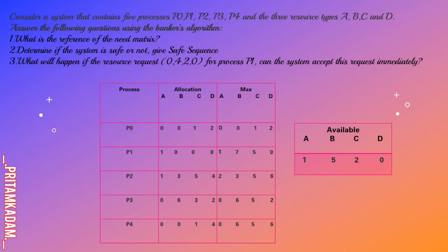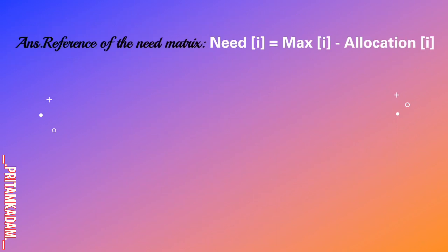Consider a system with five processes P0-P4 and four resource types A, B, C, D. We are given allocation, max, and available matrices. The questions are: find the need matrix, determine if the system is safe and give the safe sequence, and check if a resource request (0,4,2,0) for process P1 can be granted. Total = available + allocation, and need = max - allocation. The need matrix is calculated as need[i][j] = max[i][j] - allocation[i][j].